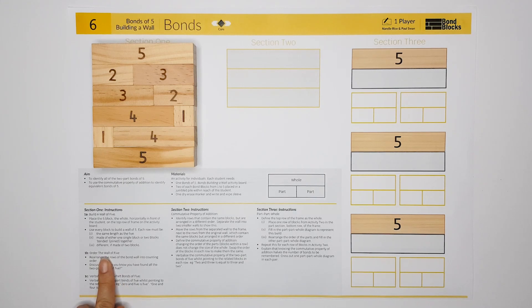The next thing we're going to do is order our wall of five. The reason we order things is that maths is the science of pattern. When things are in order, it makes maths easier to understand.